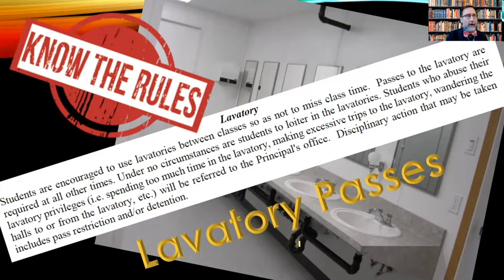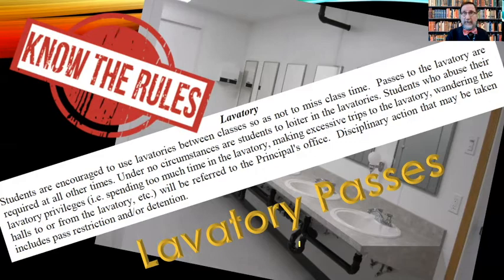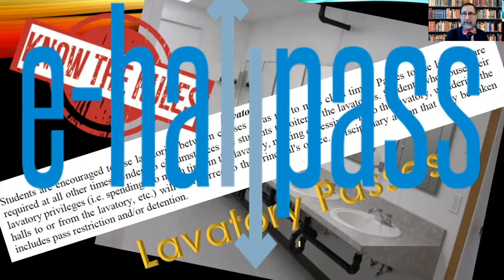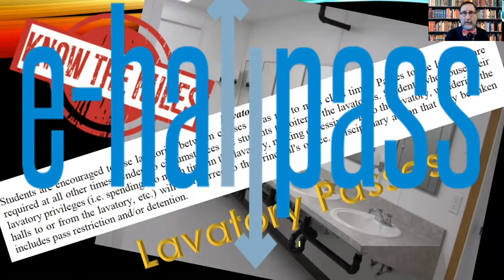I've always had a problem as a teacher with requiring students to ask permission to use the lavatory — you're 17 years old, and it's a natural bodily function. You shouldn't have to ask permission for something everyone needs. So I'm glad that this year we got e-hall pass. The way we'll use it in my classroom is one person out of the room at a time. If you need to go, simply open your laptop, generate your own e-hall pass, and I'll see it pop up on my computer. It does not require approval. You go, come back, end the pass. We don't need to discuss it — you don't need to get my permission or announce what you're doing in front of the entire class.